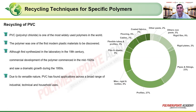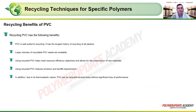Major PVC market segments include profiles, pipes and fittings, miscellaneous rigid applications, bottles, medical applications, rigid film (~9%), coated fabrics (~3%), flooring/carpeting (~6%), cable applications (~7%), and flexible tubes and profiles (~3%). PVC is well suited for recycling and has in fact the longest history of recycling of all plastics, with large volumes of recyclable PVC waste available.